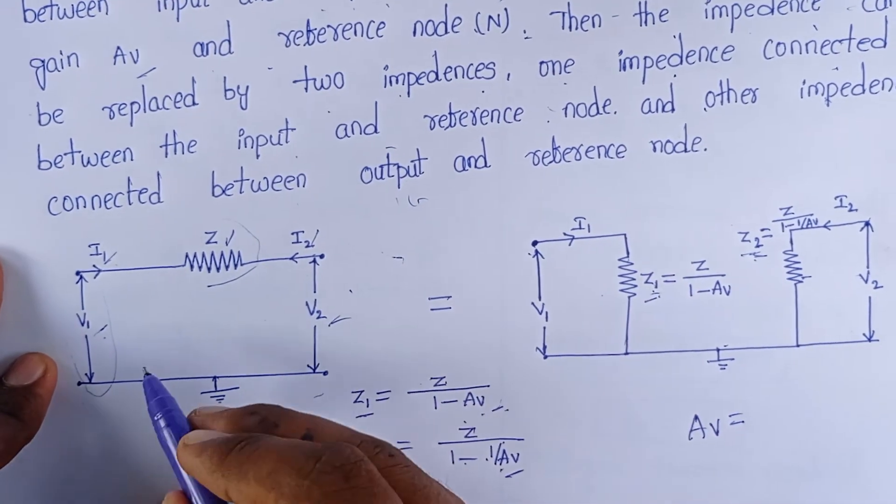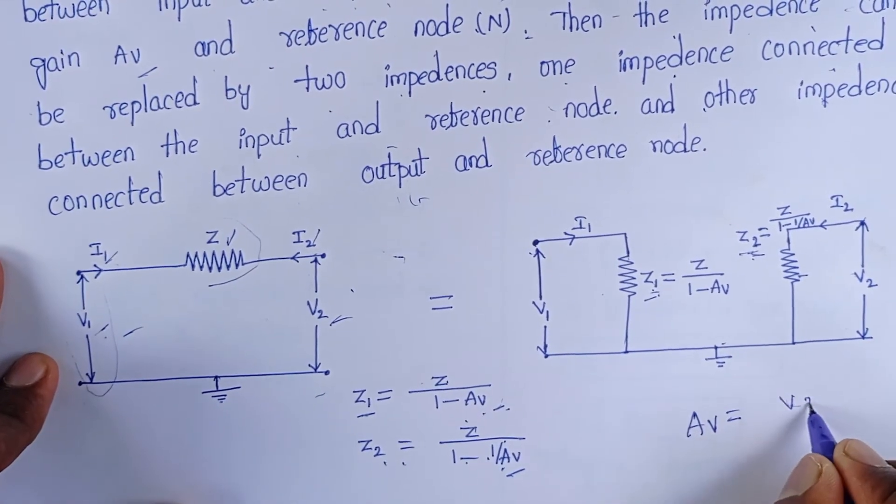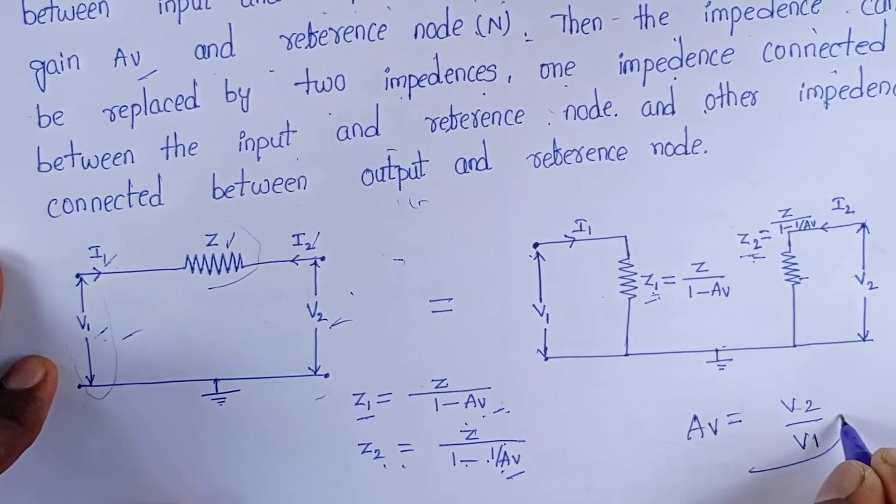Here output voltage is V2 and input voltage is V1. That is, V2 by V1 is the voltage gain.